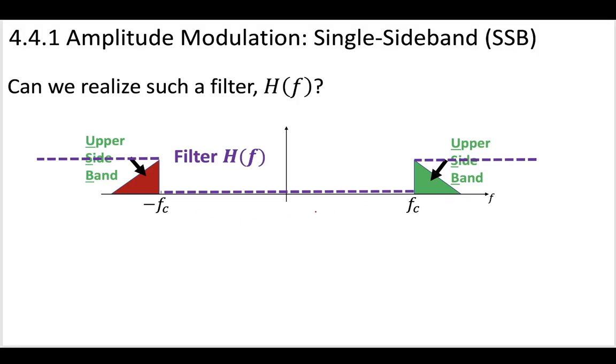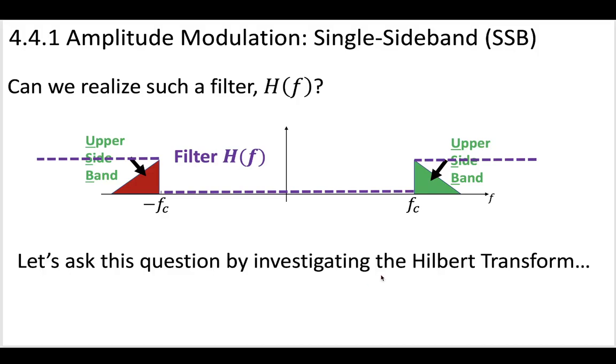So there's another type of filter besides a filter that just attenuates this. We're going to see that there's another filtering process that we can use that relies on phase shifting. And this phase shifting process is going to be called the Hilbert transform.